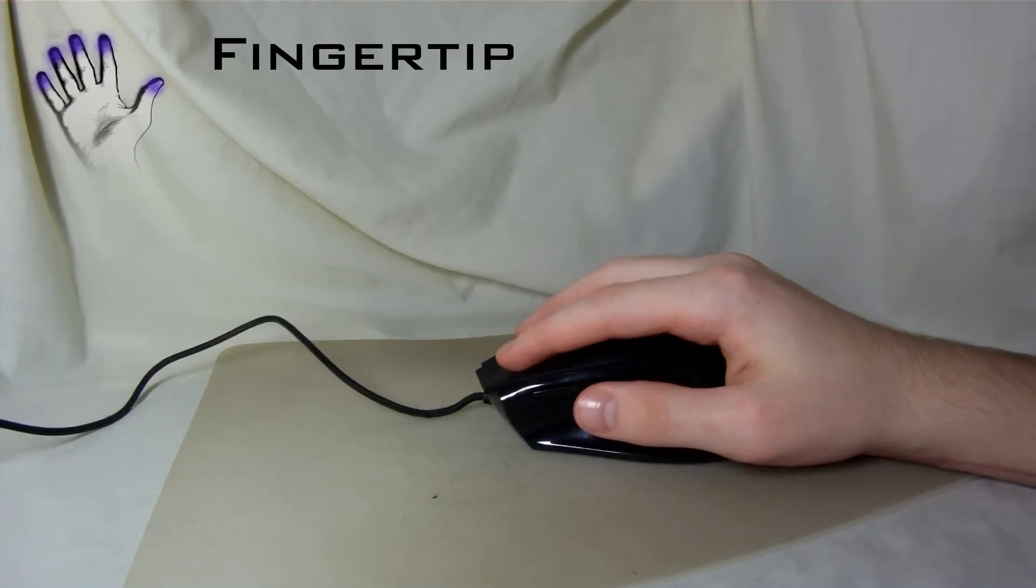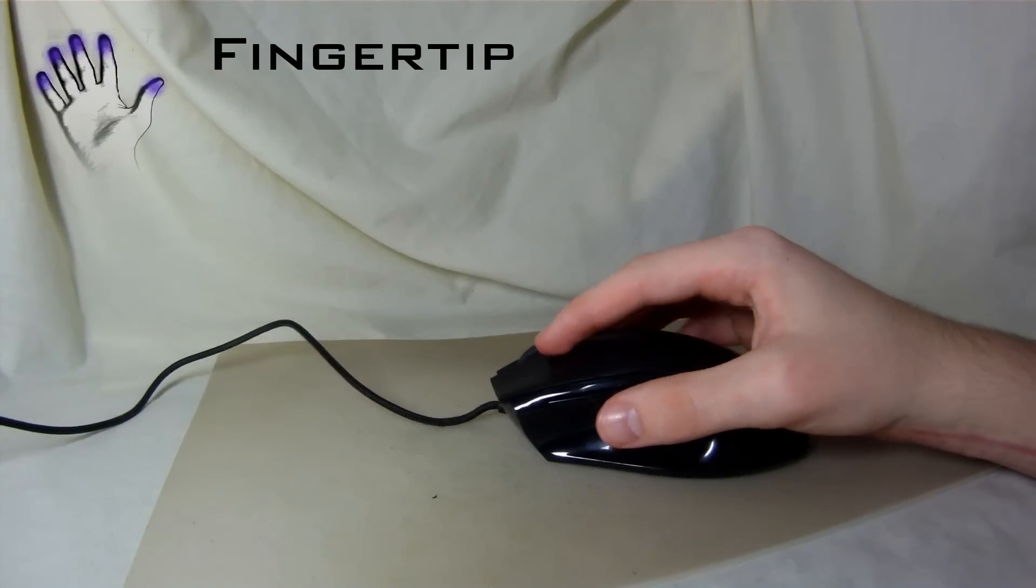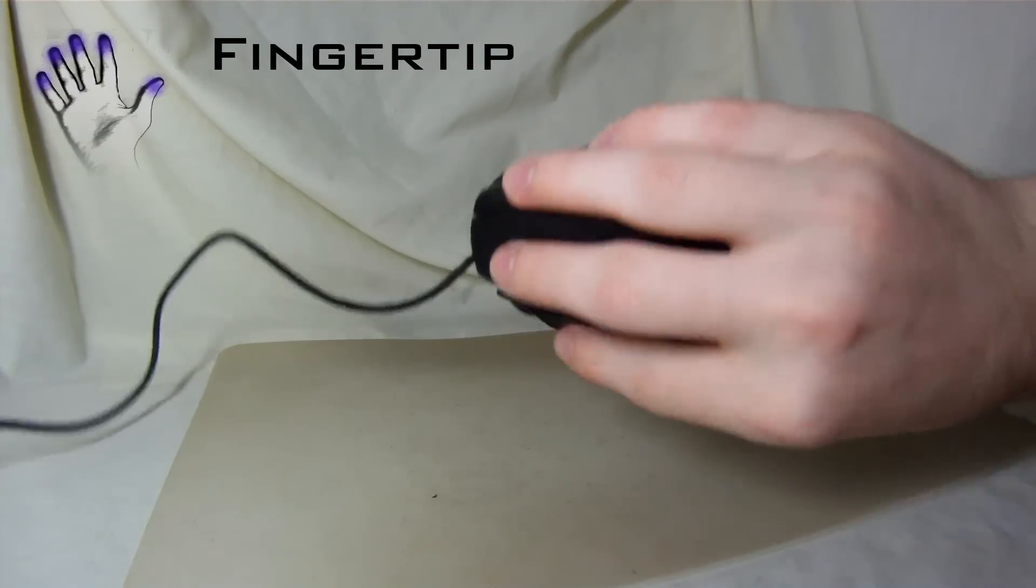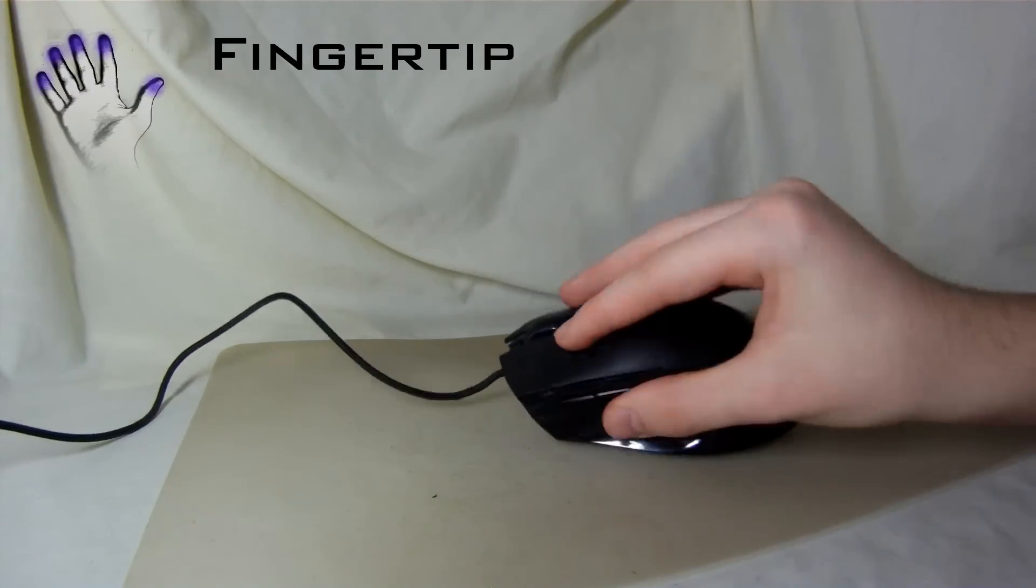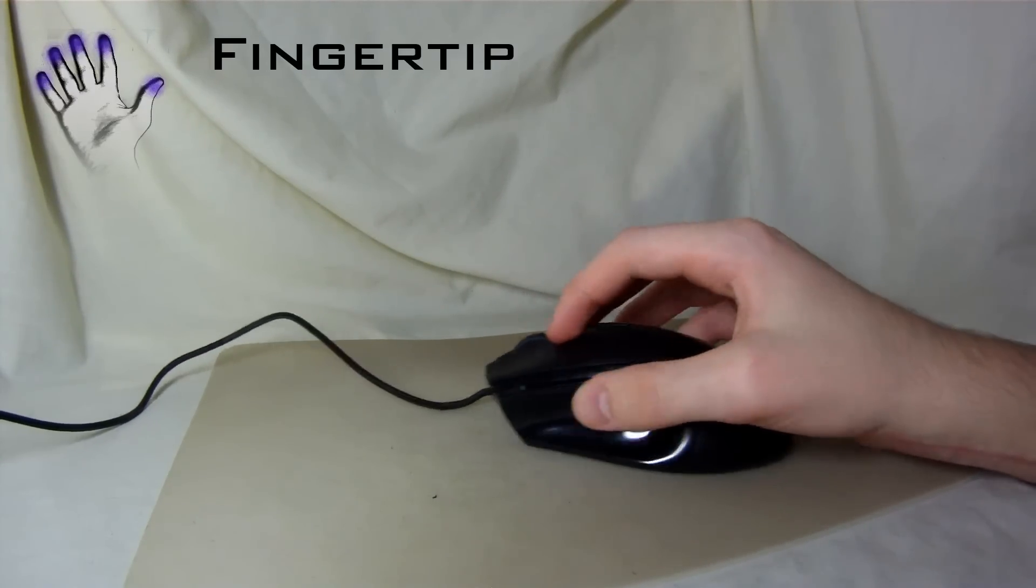The fingertip grip only has five points of contact. This allows the user to push the mouse under his hand using only the fingertips. This gives the highest precision, making fast sweeps difficult as well as pickups. Small, low profile mice are needed for the fingertip method.